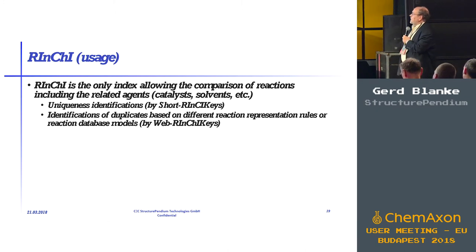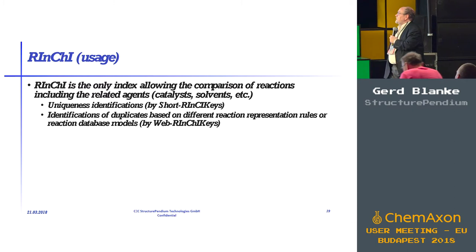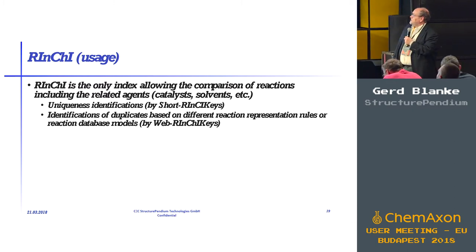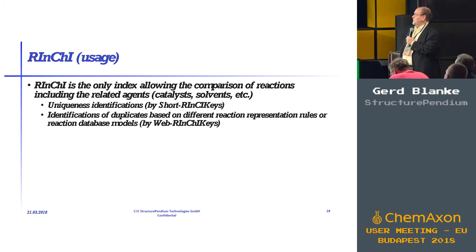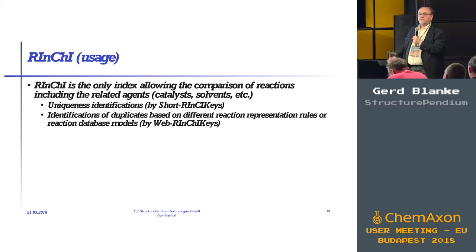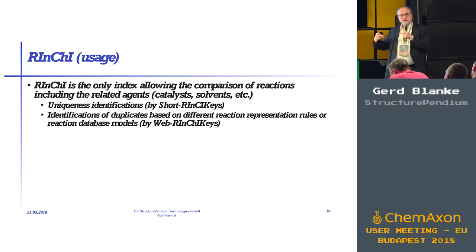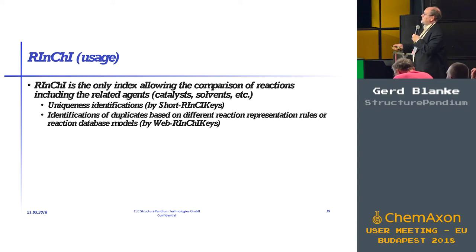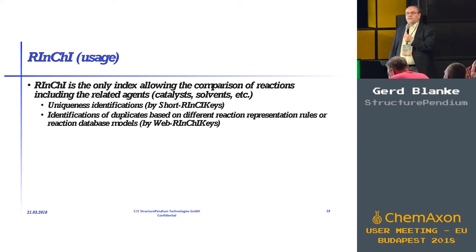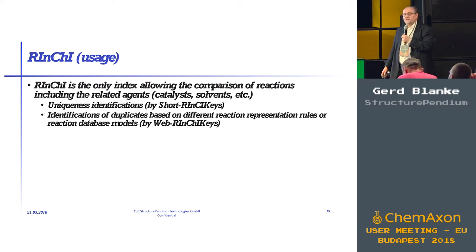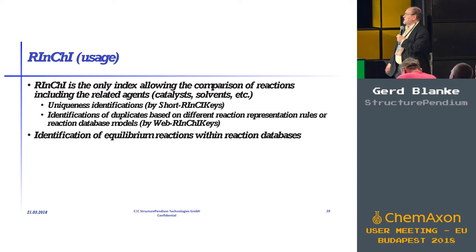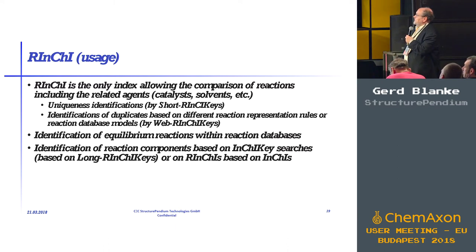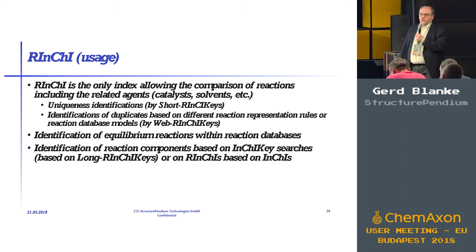Up to now, I think this is the only way to index reactions including catalysts and solvents. You have uniqueness checks using the Reaction InChI key — for example, if you want to compare two reaction databases from different vendors, just use the keys and compare them. Quite interestingly, identification of duplicates goes a step further: it is one of the simplest ways to identify equilibrium reactions in your databases, which was a very interesting finding, as none of the current reaction formats is capable of doing that.